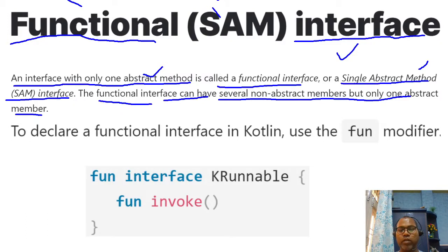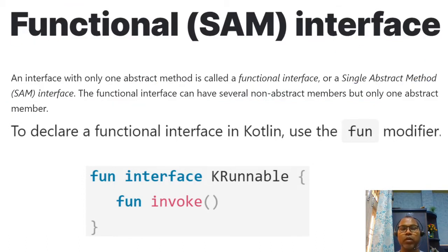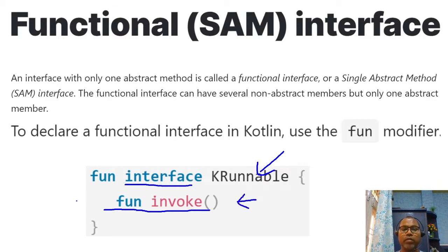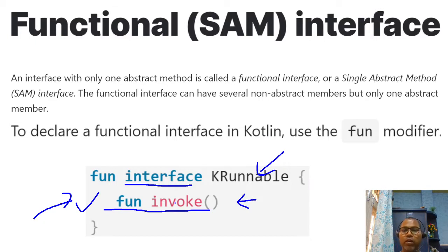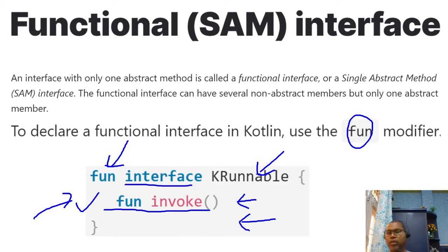So please ensure that if you are going to declare a functional interface, you can define other members, but only one abstract method. How does Kotlin let you declare a functional interface? To make the difference between a normal interface and a functional interface, Kotlin says you can use the `fun` modifier. If any interface has a `fun` modifier, that means it is a functional interface, and you can define only one abstract method. If you try to define more than one, the compiler won't allow it.